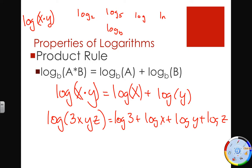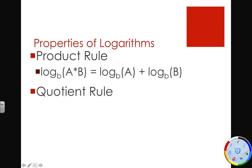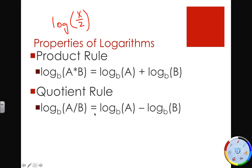Now the quotient rule: this is the logarithm of a quotient — something like log of x over y or log of x over 2. The property states that the log of a quotient equals the difference of the log of the numerator minus the log of the denominator. So the log of x over 2 is rewritten as log of x minus log of 2.